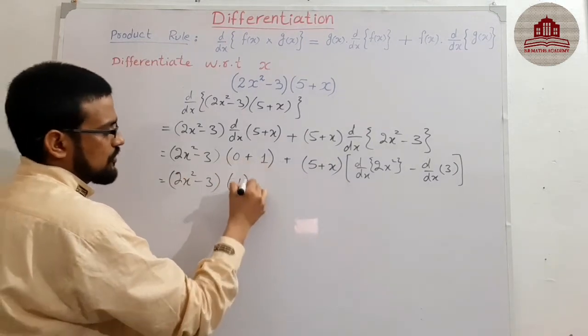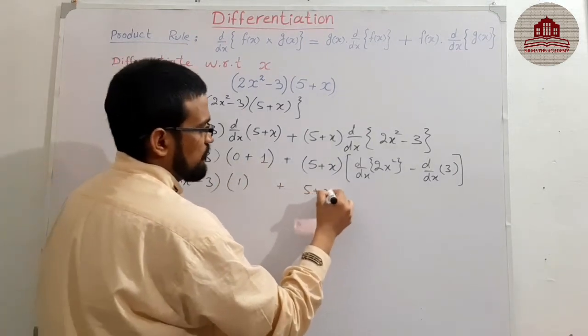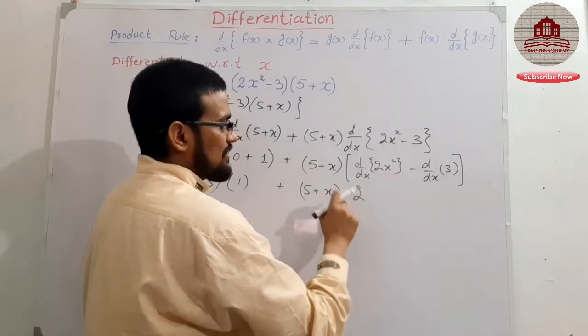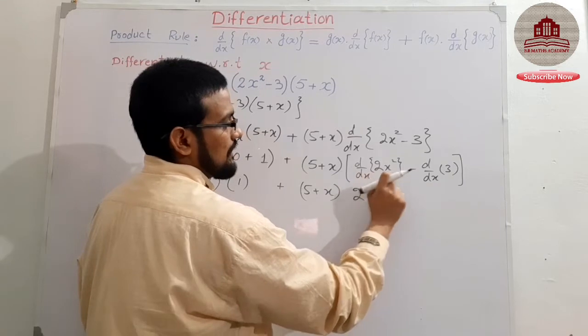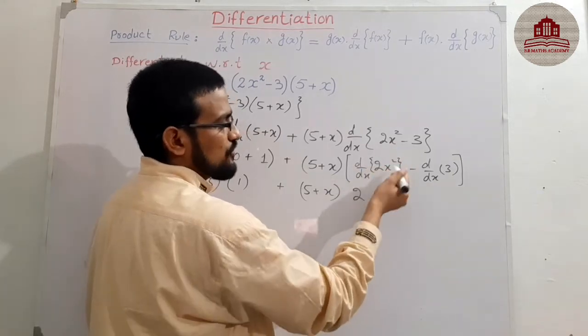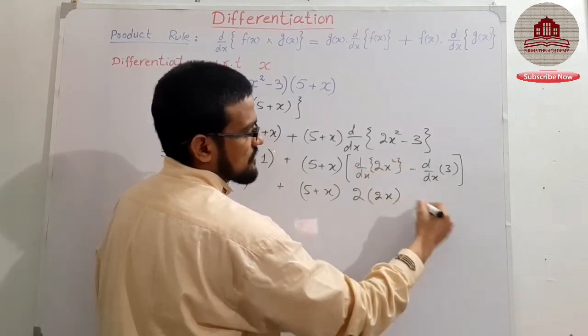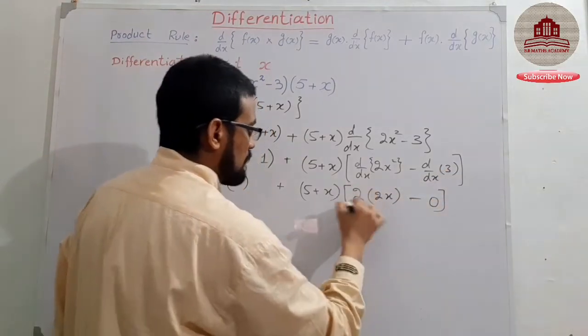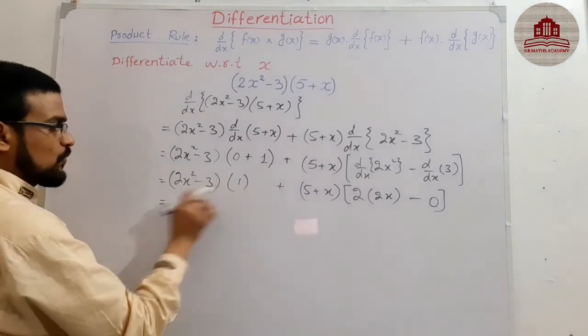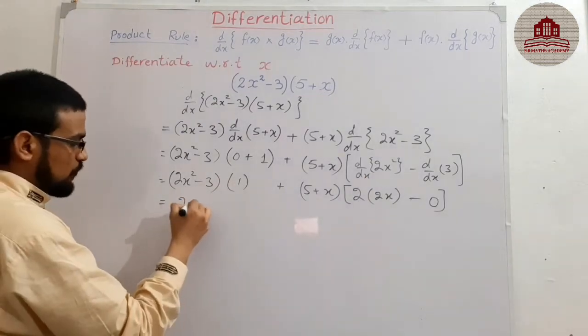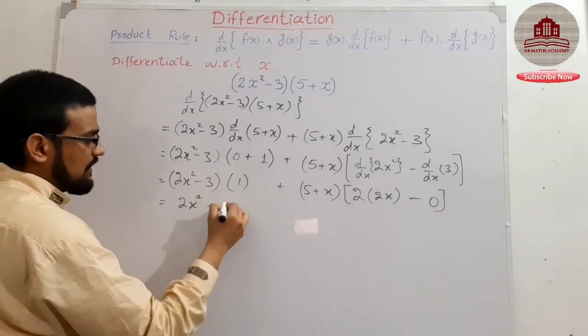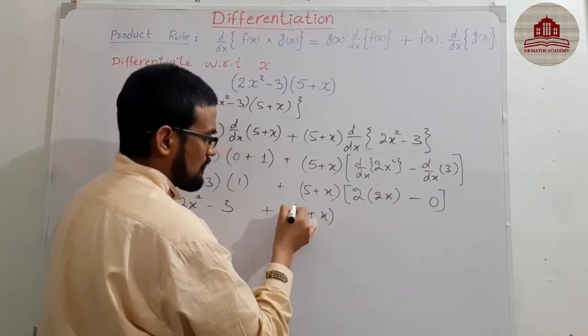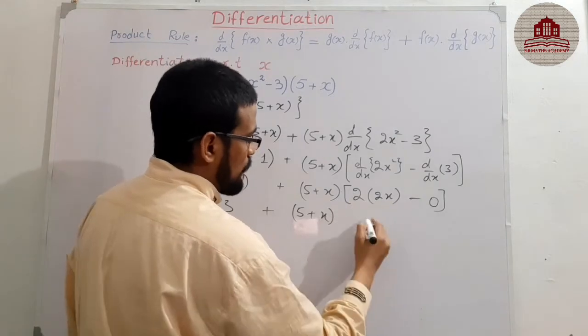0 plus 1, okay students, 1, and then (5 + x). Derivative 2 is a scalar number, 2 it becomes multiple, then derivative of x², x² means 2x, and 3 is a constant, 0. 1 multiply, 1 is multiplicative identity, so it remains same. (5 + x), 2 into 2 is 4, 4x.